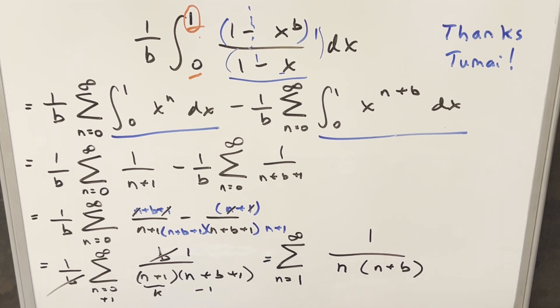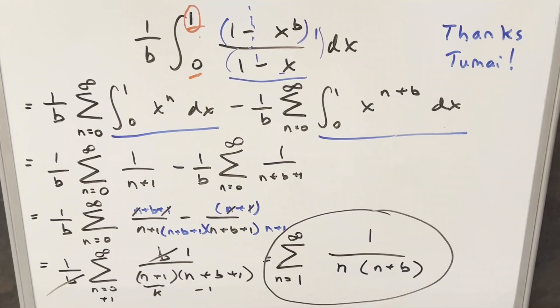And so for my final solution to this, we have the sum from n equals 1 to infinity of 1 over n times n plus b. Okay, there you go. Good one today. Thanks again to Tumai for sending me the problem. Thanks so much for watching. Have a good day.